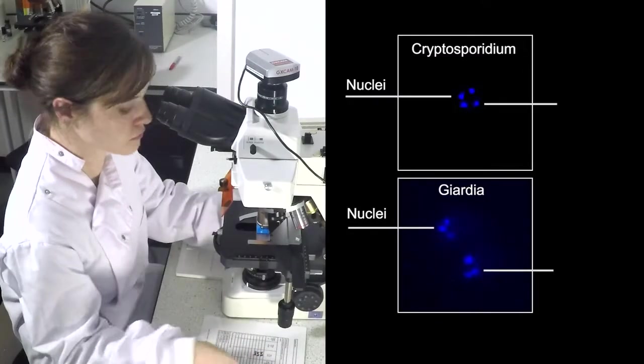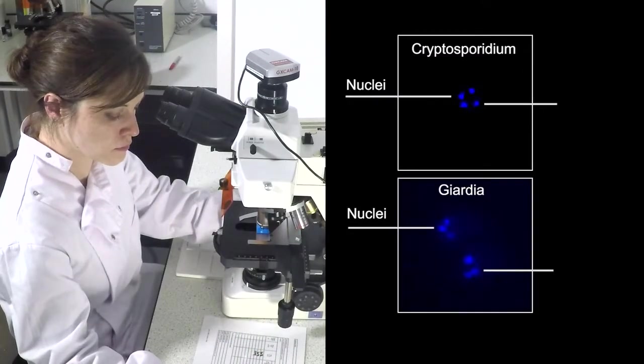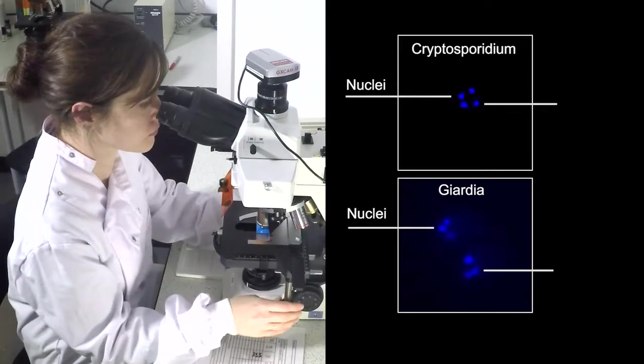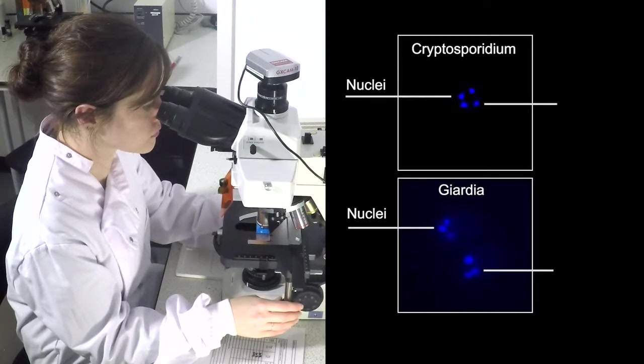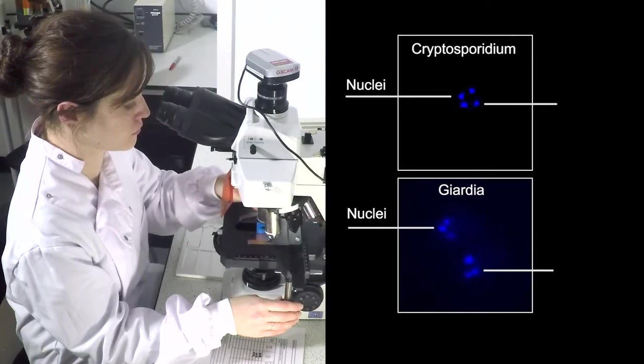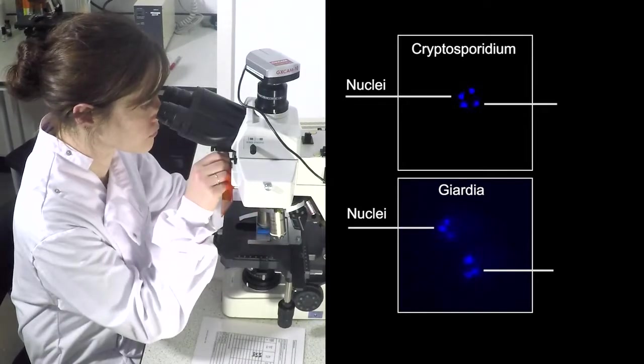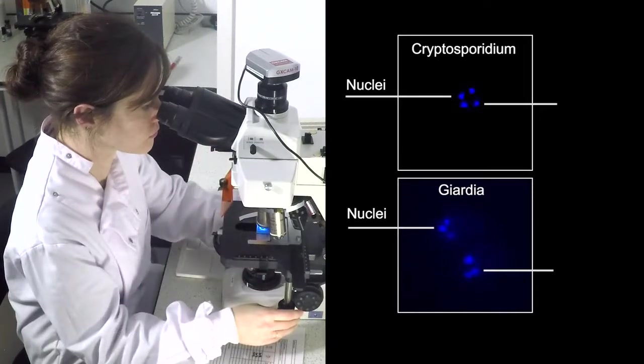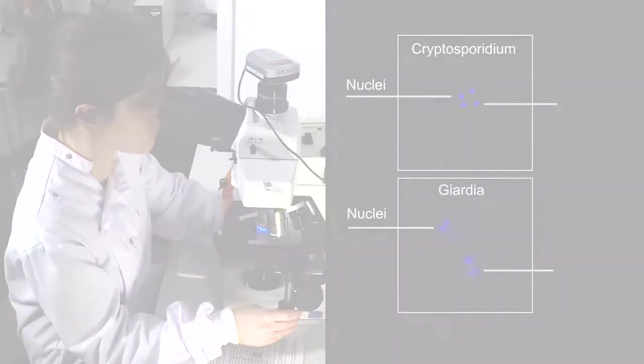In addition to FITC staining, Cryptosporidium oocysts and Giardia cysts should be identified by characteristic DAPI staining. DAPI analysis should be performed at least 400 times magnification, and the number of distinct bright sky blue nuclei should be noted.